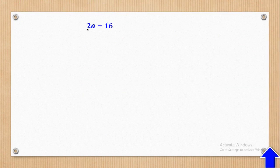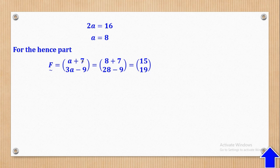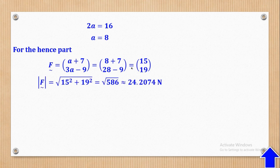Simplifying gives 2A = 16, so A = 8. For the 'hence' part, the resultant force is (A + 7)i + (3A − 9)j. Substituting A = 8 gives 15i + 19j. The magnitude is √(15² + 19²) = 24.2074 Newtons.